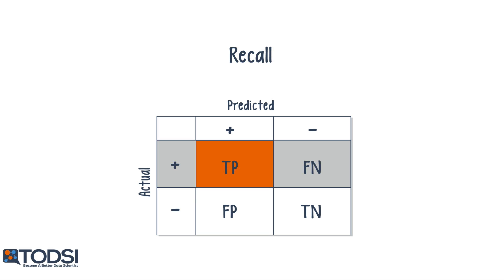We can also look at the number of times the model predicted positive and ask: what percentage of these predictions were actually positive? This metric is known as precision, expressed as the number of true positives divided by the number of data points classified as positive. In other words, we want to know how many of the positive data points the model was able to recall, and how precise were the actual predictions. Precision and recall are defined for the negative data points as well.